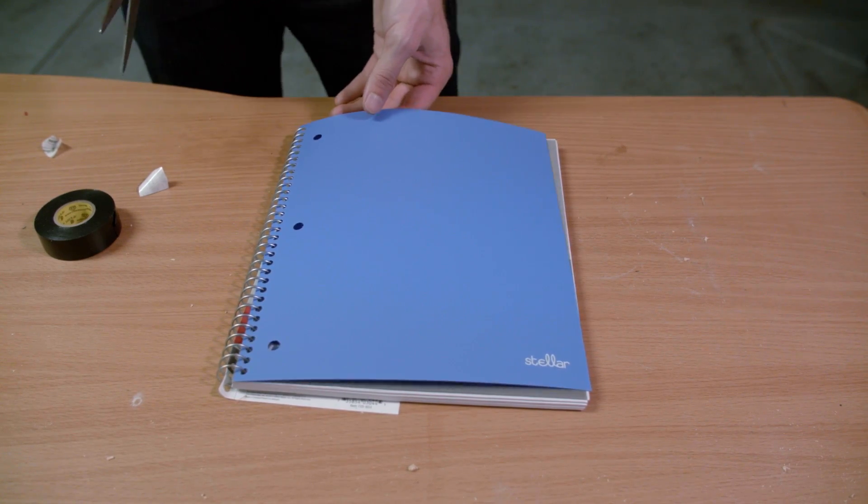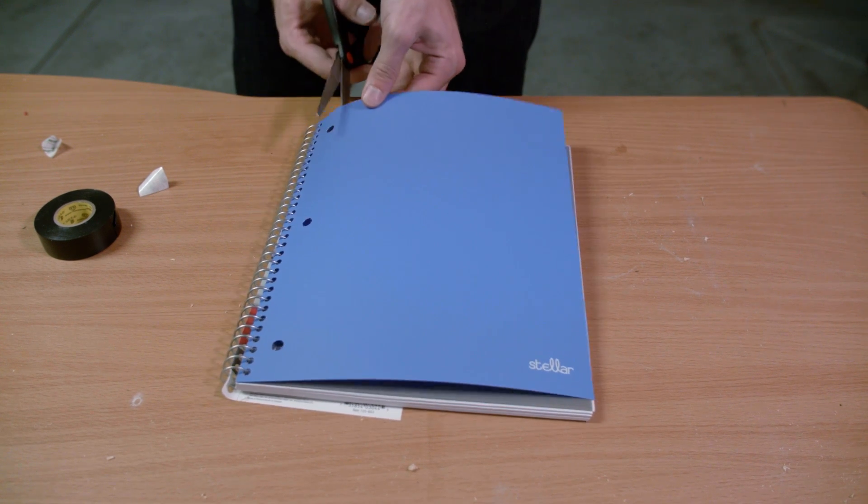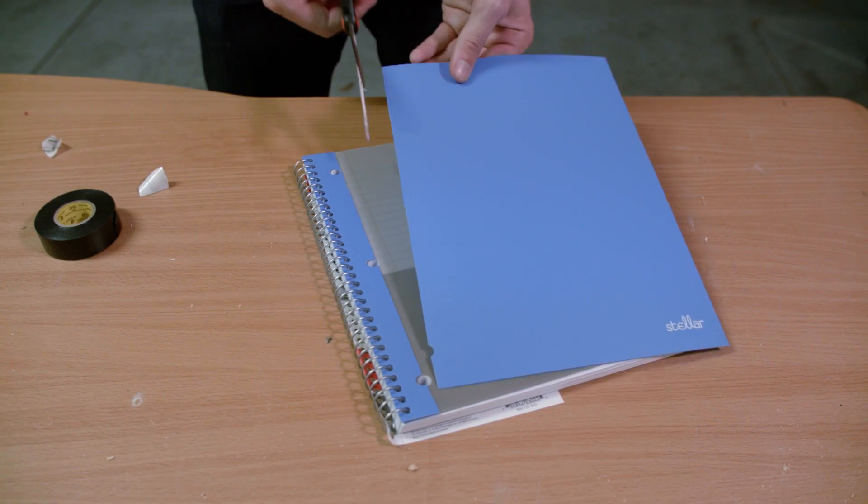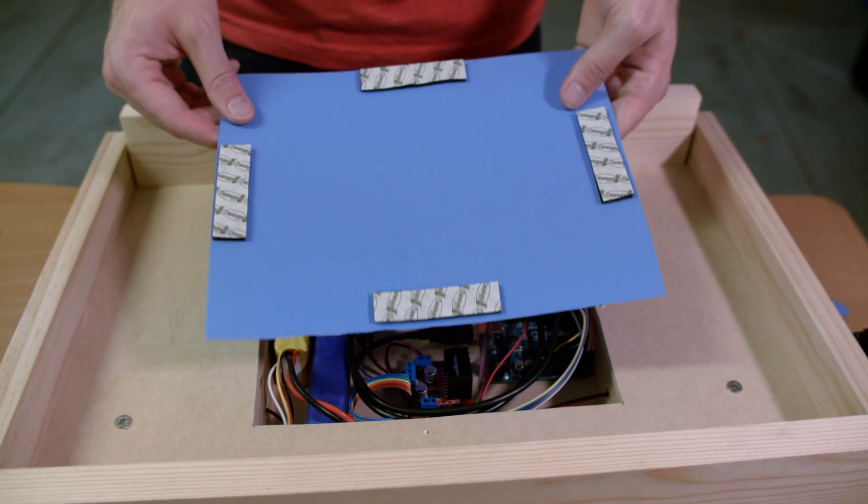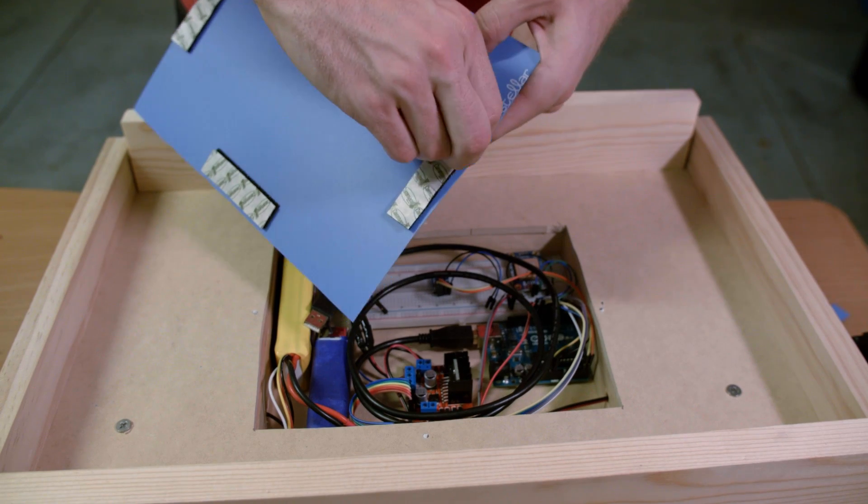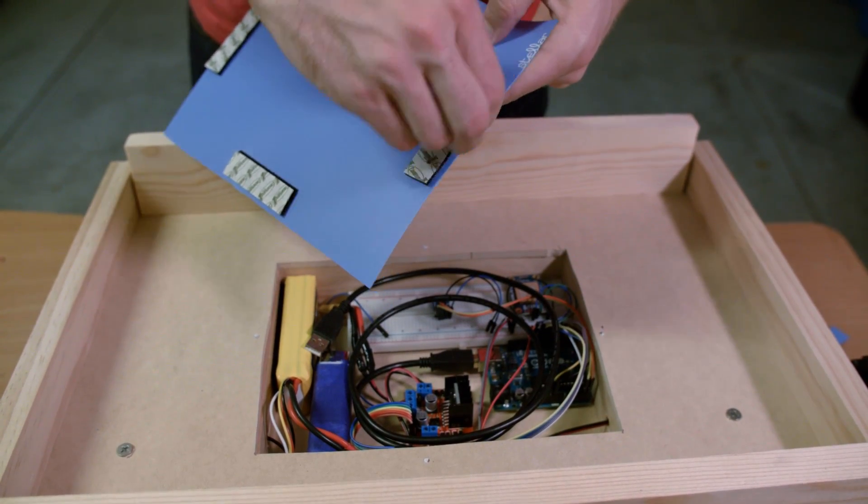I want to cover up the electronics. So I used this spare notebook that I had laying around and cut the plastic cover off the front. This is nice because it's pretty thin and it's nice and flexible. I just used some more of those picture hanging wall strips and stuck it on over the top of the electronics.